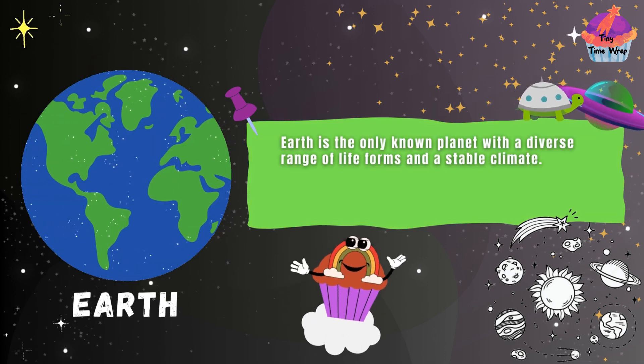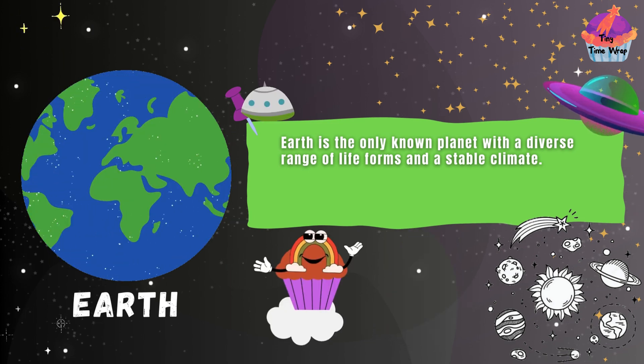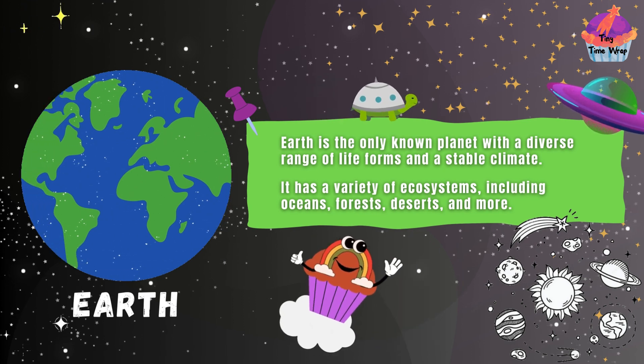Earth is the only known planet with a diverse range of life forms and a stable climate. It has a variety of ecosystems, including oceans, forests, deserts, and more.